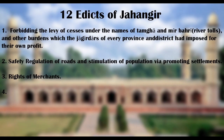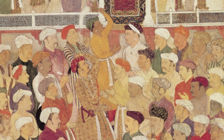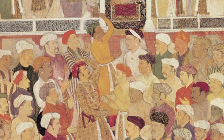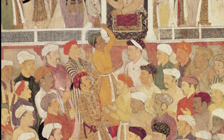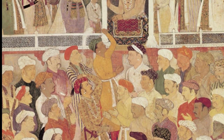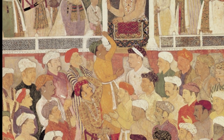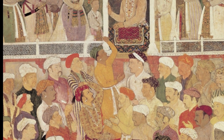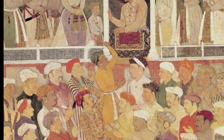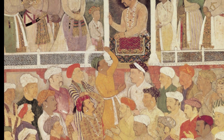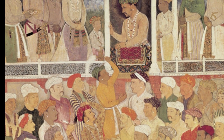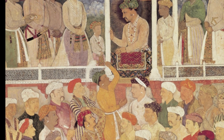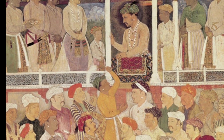4. Rights of Inheritance of Property. This order maintains that in Jahangir's empire, if a Muslim or a non-Muslim dies, his property and effects would be left for his heirs. No one should interfere with them. If he should have no heirs, they should appoint inspectors and separate guardians to guard the property so that its value might be expended in lawful expenditure such as the building of mosques and Sarais, repair of bridges, and the digging of tanks and wells.